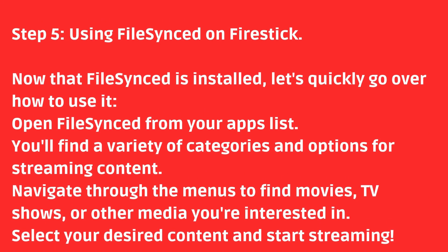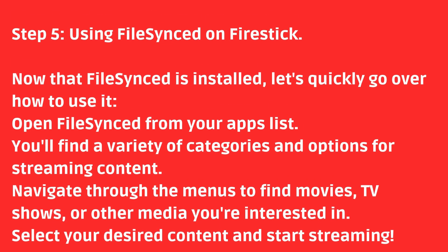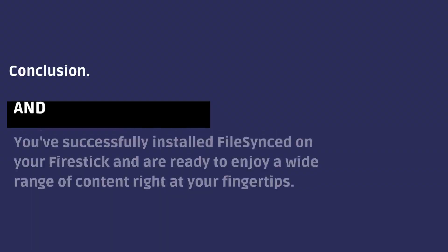Step five: using FileSync on Fire Stick. Now that FileSync is installed, let's quickly go over how to use it. Open FileSync from your apps list. You'll find a variety of categories and options for streaming content. Navigate through the menus to find movies, TV shows, or other media you're interested in. Select your desired content and start streaming.